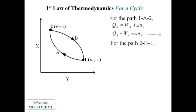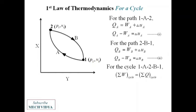Similarly for the path 2b1, q_b = w_b + Δu_b. Rearranging we get equation 2. Now for the cycle 1a2b1, we know that in a cycle the summation of all the work done is equal to the summation of all the heat transfer. So w_a + w_b = q_a + q_b. Rearranging I get q_a - w_a = w_b - q_b.